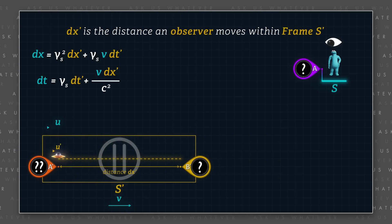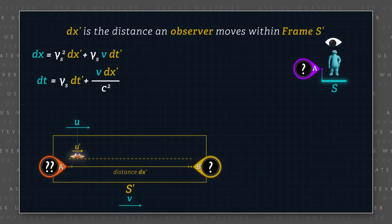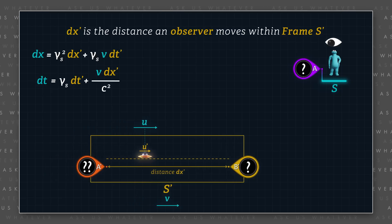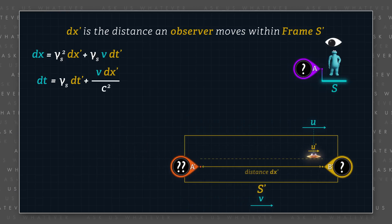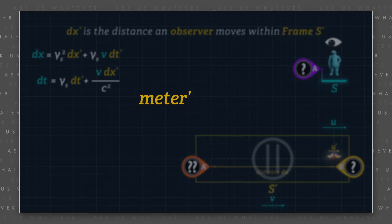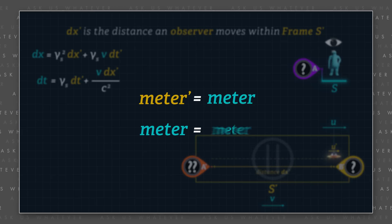The distance dx prime is how far an object or observer in frame s prime moves between events within frame s prime. Recall that meter sticks in the alternative model do not contract. So a meter prime is a meter and a meter is a meter.